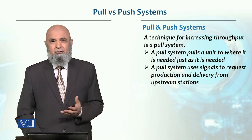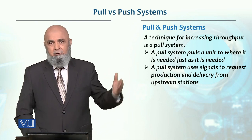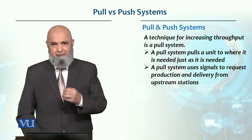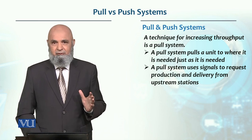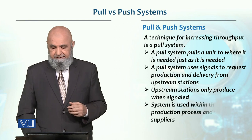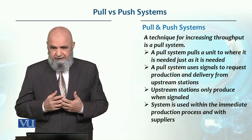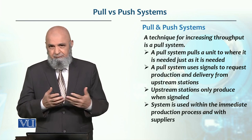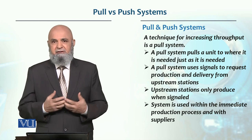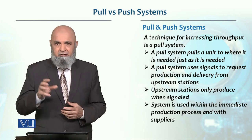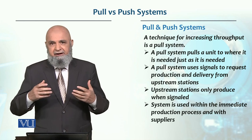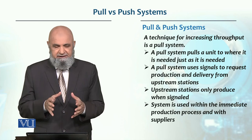In the push system, on the other hand, there is no such signal. The upstream work center produces and sends material downstream whether or not the downstream work center needs it — even if there is a machine or equipment breakdown downstream. This is basically the difference between the two systems. Within the immediate production work centers, the pull system applies, and suppliers also operate through this pull system — they supply material only when they receive a signal that material is needed.